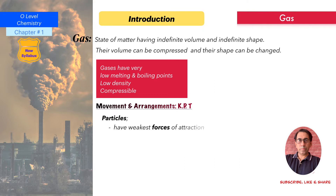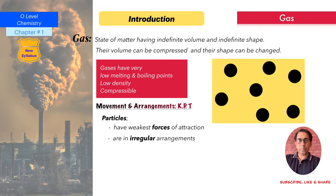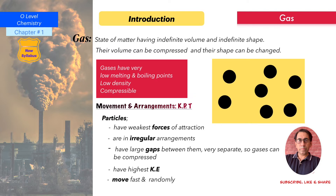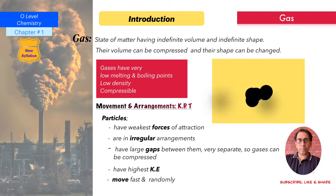Movement and arrangement of particles in gases according to kinetic particle theory: particles have very weak forces of attraction. Particles are in an irregular arrangement. There are large gaps between particles — they are very much separated, which is why gases can be compressed. Particles have high kinetic energy and move fast and randomly. These are the basic postulates of particle movement and arrangement for the gaseous state.